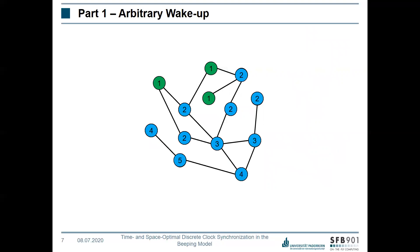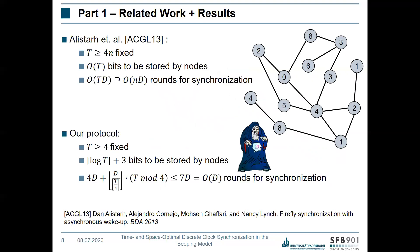This is where our synchronization protocol comes into place. For related work, Alistair et al. investigated the same problem and gave an algorithm running in O(t·d) time, where d is the diameter of the network. In their algorithm, the period t had to be at least four times the number of nodes, which is why it is not optimal. In our protocol, we fix this by requiring t to be only a constant of at least four, obtaining a runtime of O(d) rounds for synchronization.